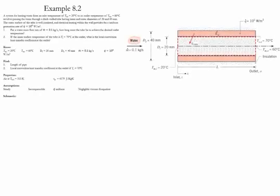Example 8.2. In this example we consider a system for heating water which has an inlet temperature of 20 celsius and an outlet temperature of 60 celsius. This system involves a thick wall tube having an inner and outer diameter which are given. The outer surface of the tube is well insulated and the inside of the wall has an electrical heating part which creates a uniform heat generation rate.